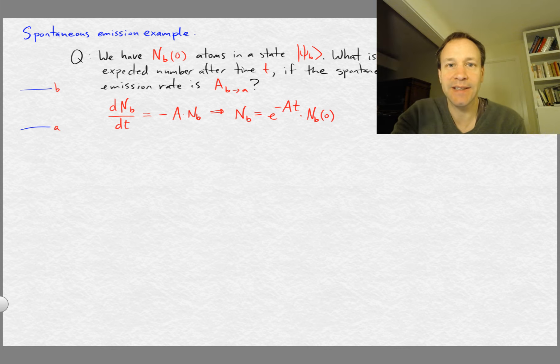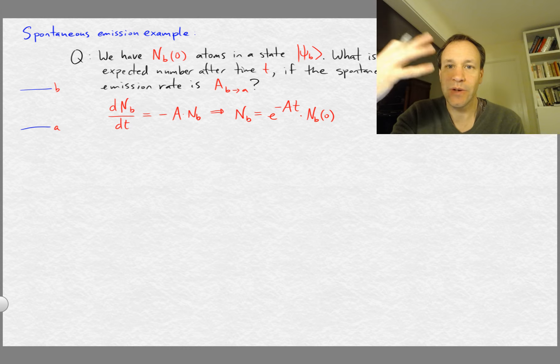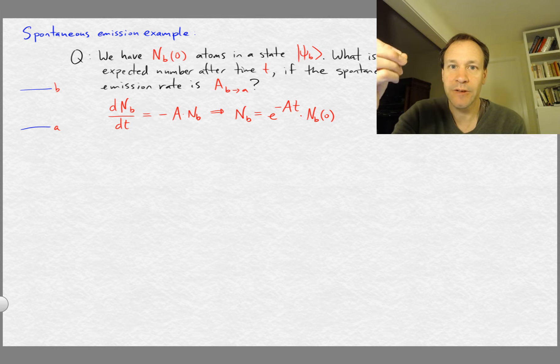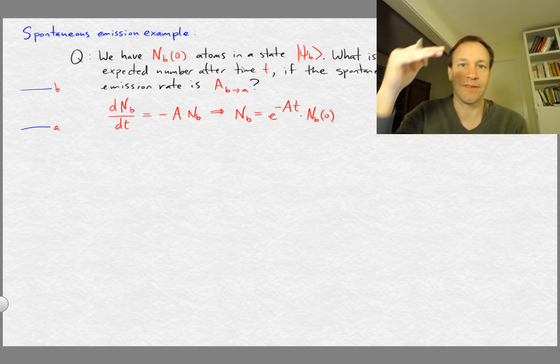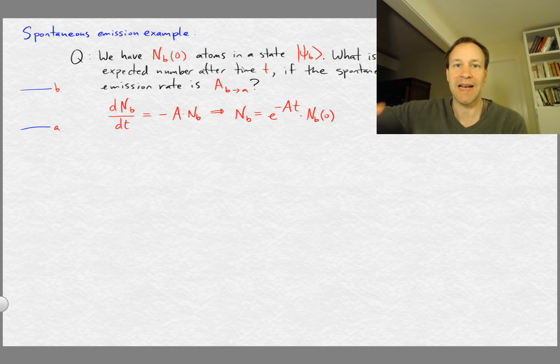It's just a standard exponential decay. So this is exactly the same equation that we would use when thinking about some radioactive material. If we wanted to know how many nuclei of a certain isotope remain after some amount of time and we have a rate for those nuclei decaying to some other nuclei, then we would do the same thing and we would find the same kind of exponential expression.